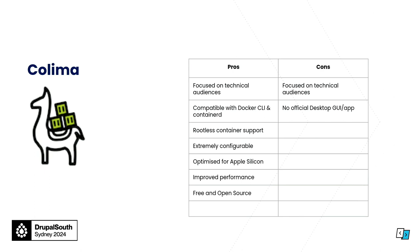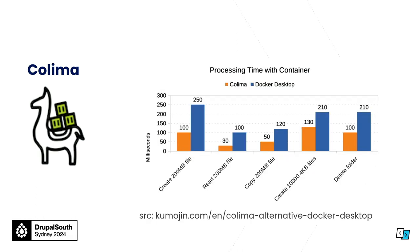Colima is another community favorite — I've seen it pop up many times. I personally haven't had a lot of luck with it, but it is extremely customizable and provides quite a lot. It's free and open source, but the downside is it doesn't have a UI. Some interesting stats on performance on file systems — Colima versus Docker Desktop — show that if you want to seek differences and improvements in your workflow, there are options. Docker Desktop is cohesive and complete, but if you want alternatives, they exist.